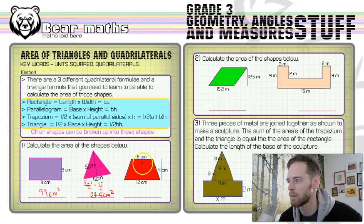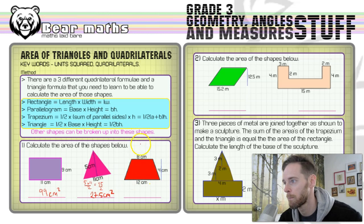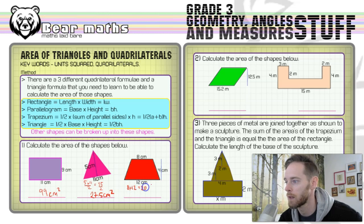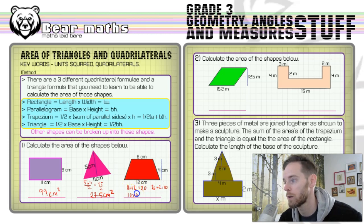For the trapezium, there's a three-step method. First, add the parallel sides: 8 plus 12 equals 20. Second, half that answer: 20 divided by 2 equals 10. Third, multiply by the perpendicular height of 4: 10 times 4 equals 40.